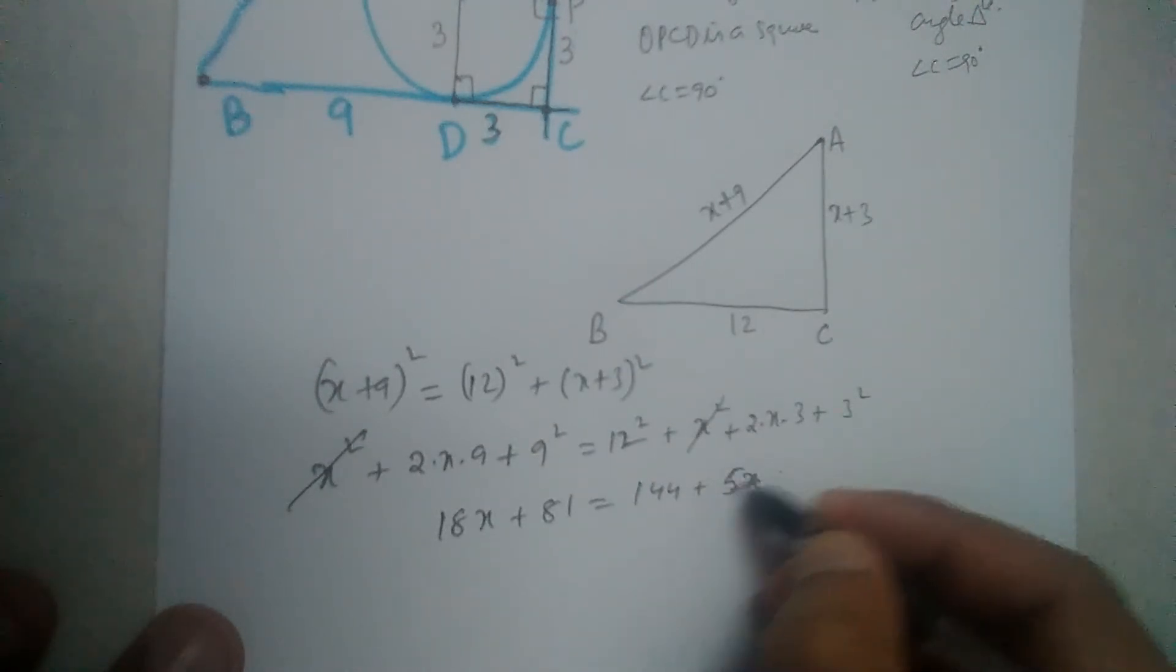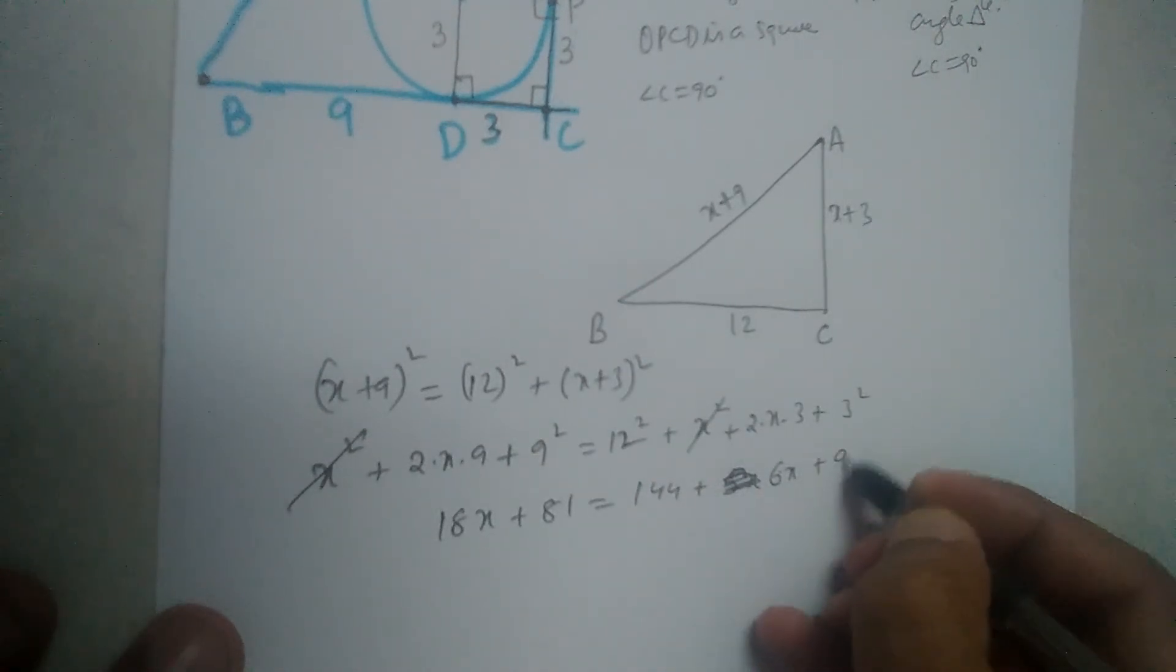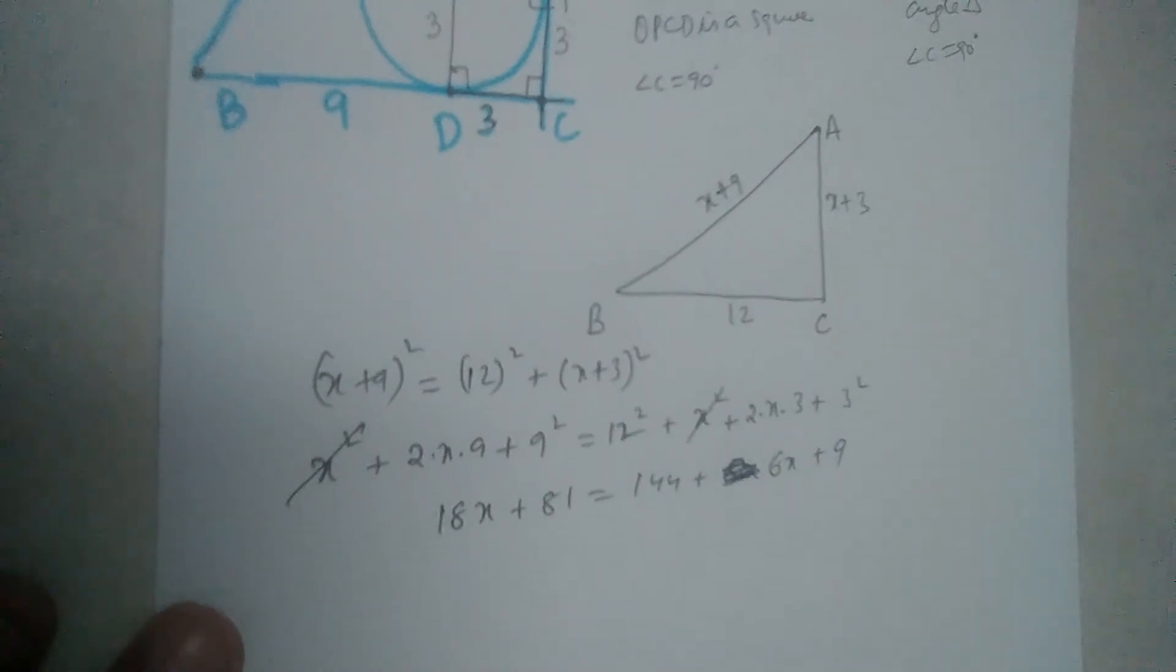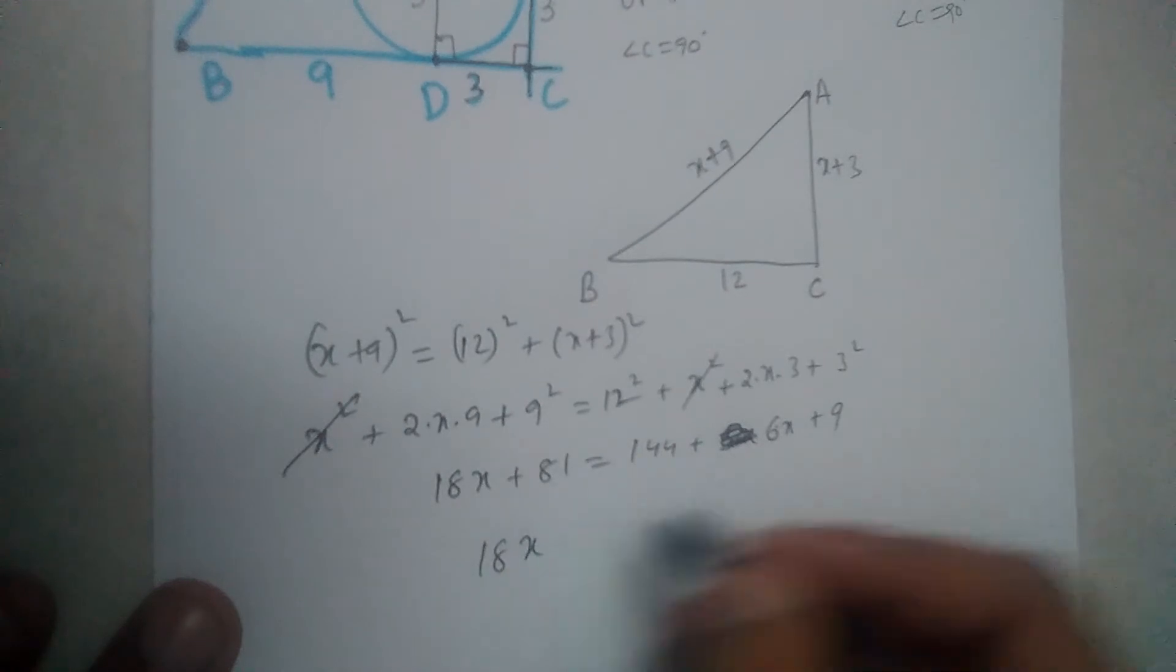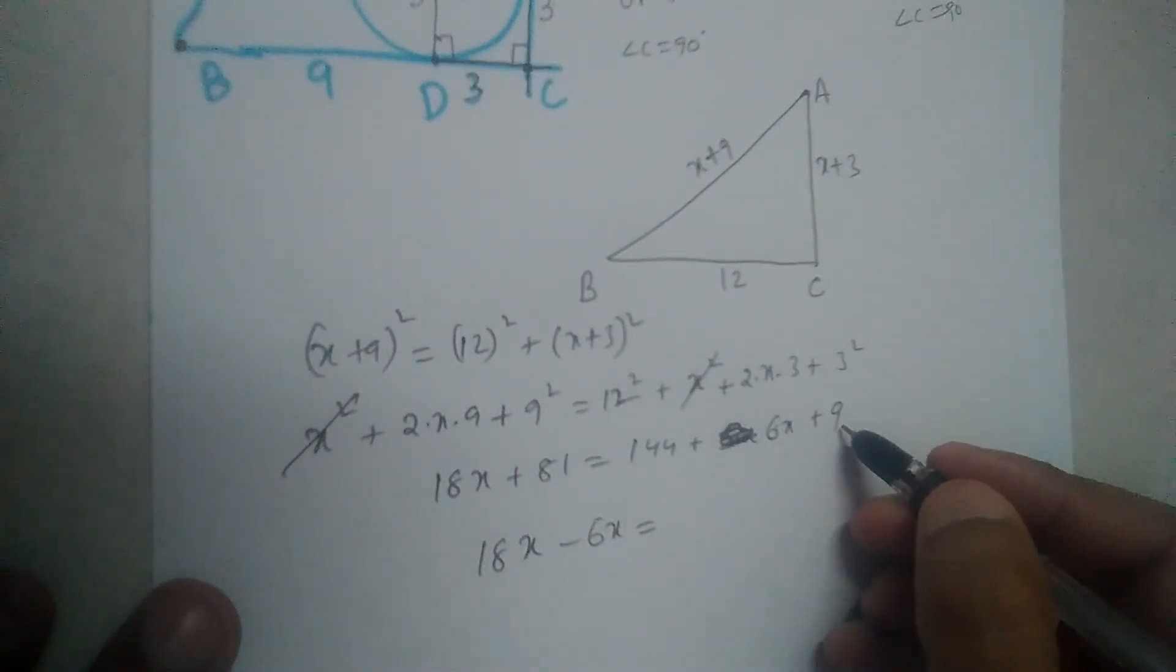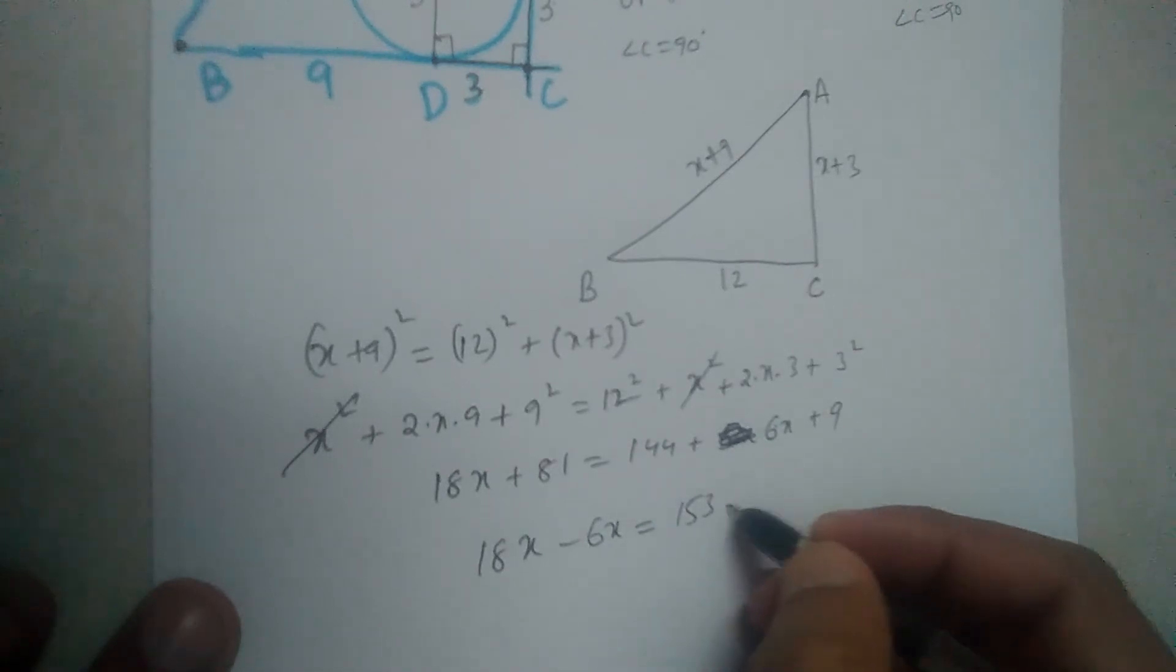All the X values on one side: 18X minus 6X equals 144 plus 9, which is 153, minus 81.